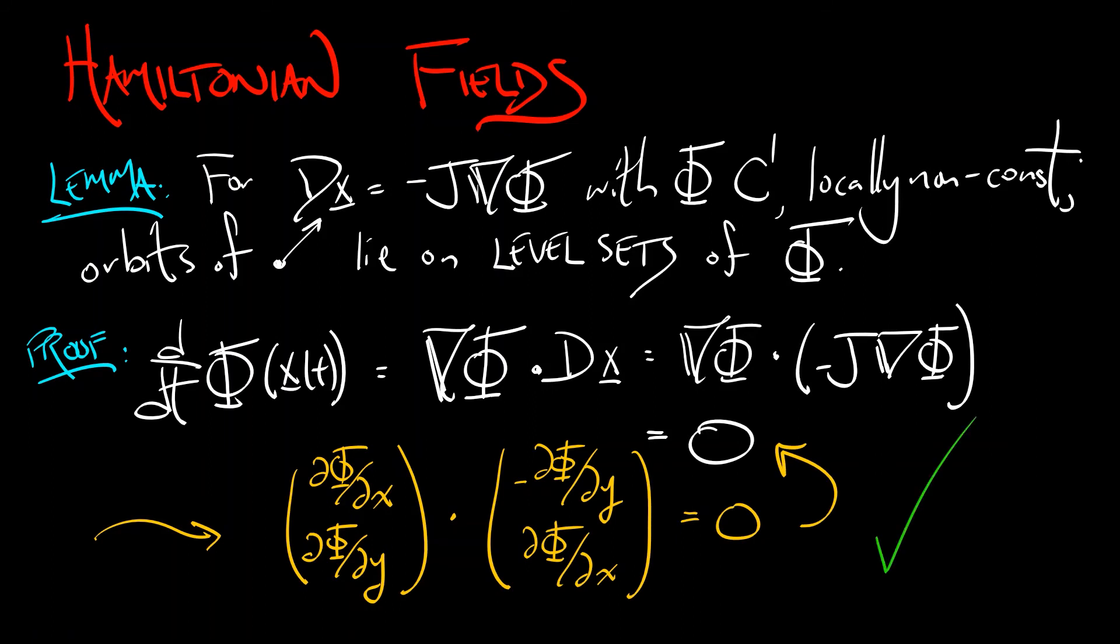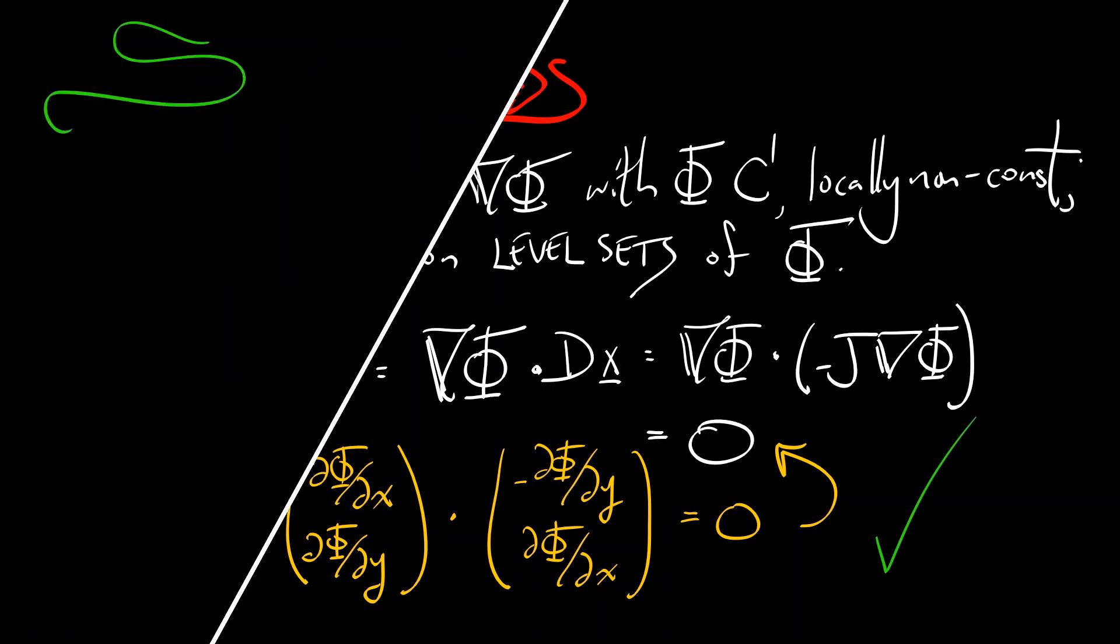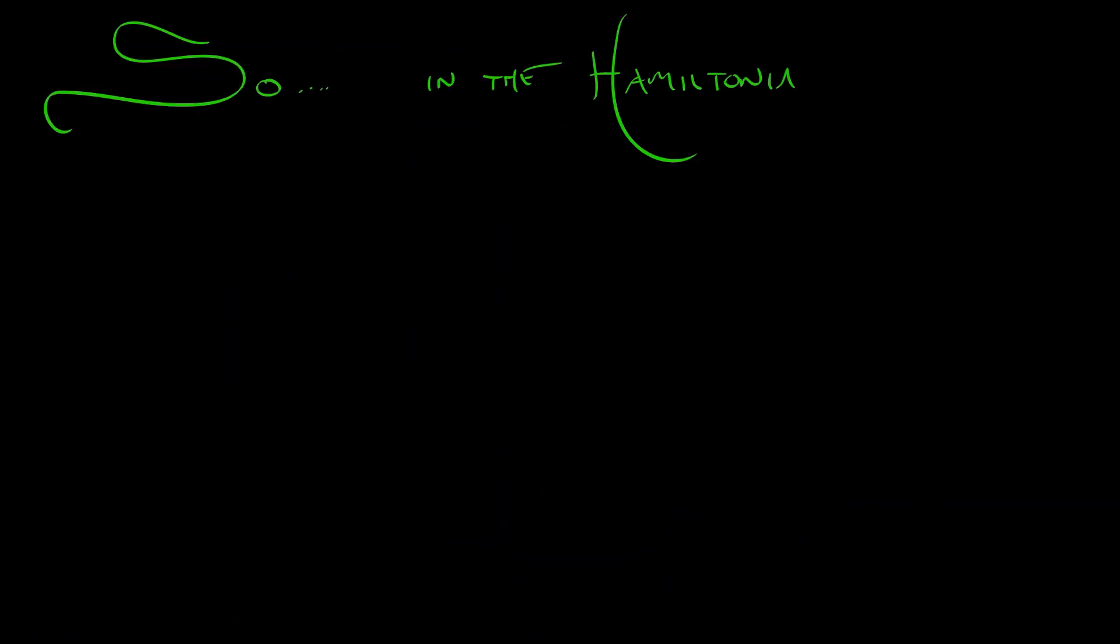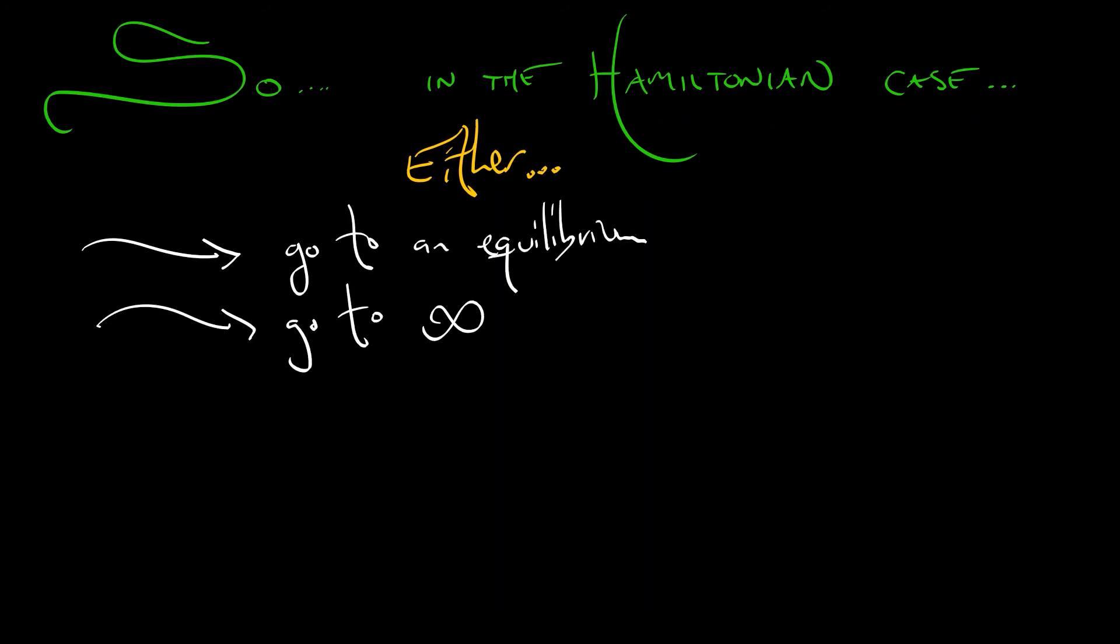But what this really means is that all of your level sets, well, lots of them are going to be simple closed curves and hence periodic orbits. In fact, in this Hamiltonian case, either your orbit is going to an equilibrium or you're running off to infinity or you have this bounded closed orbit. You're on a periodic orbit. They tend to be all over the place.